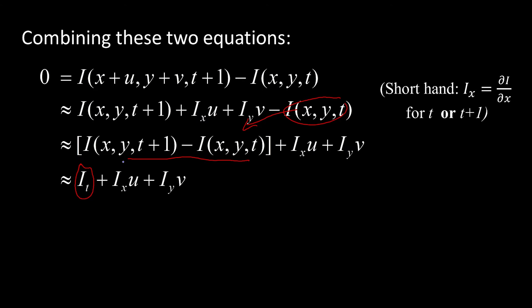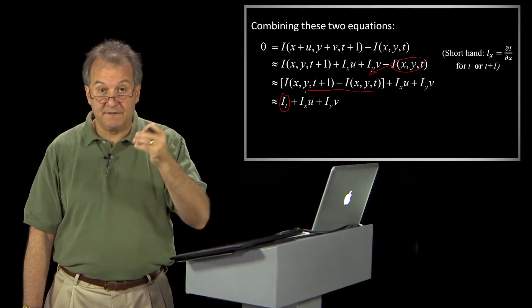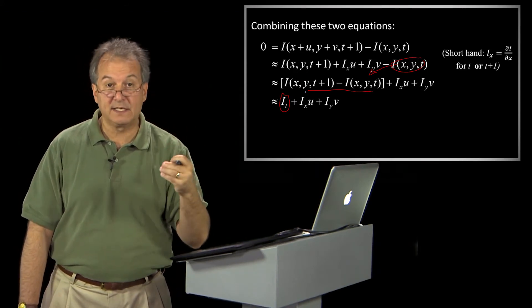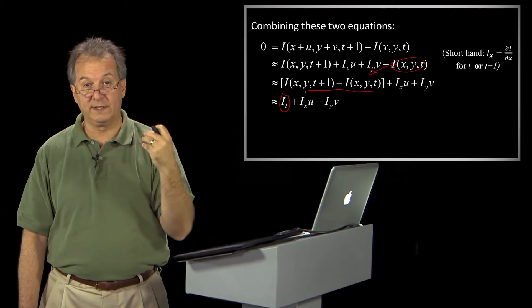Well, what is i sub t? If i of x is the derivative of i in the x direction, and i sub y is the derivative of i in the y direction, i sub t is the derivative of i in the time direction. It's what's called the temporal derivative. And remember, our imagery is now a function of x, y, and t. So I can take a derivative in x, in y, or in t.